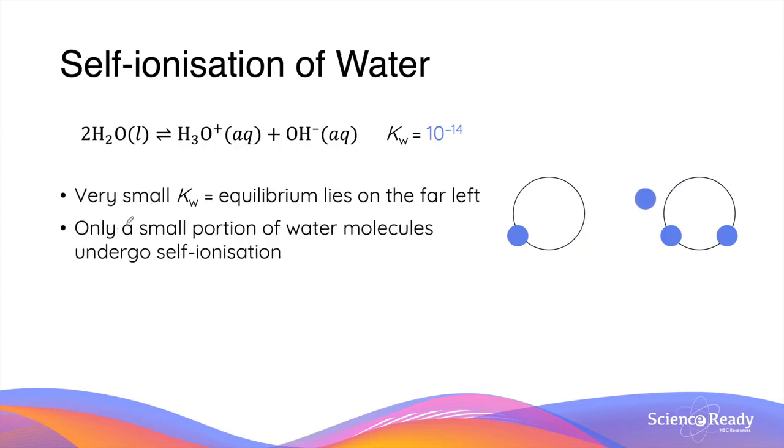At room temperature, the value of Kw is very small, 10 to the power of minus 14. This means the equilibrium position of this reaction lies well on the left-hand side. Although this reaction occurs in any body of water, only a small proportion of water molecules actually undergo the reaction.